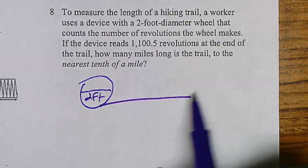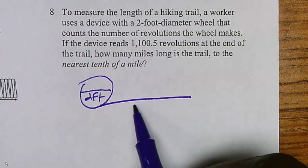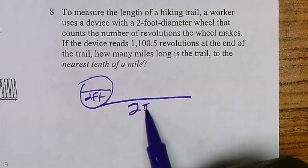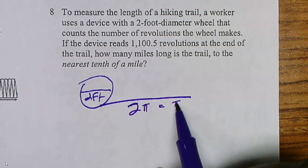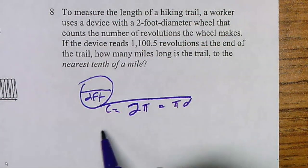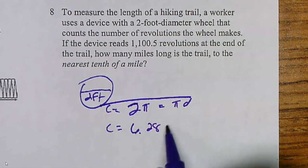And every time it turns once, it is going on its circumference. So this length is going to be two times pi, which is pi times diameter. There's a circumference. So one turn gives you 6.28 feet.